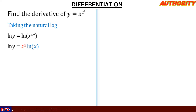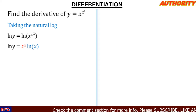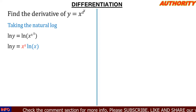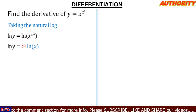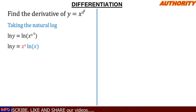Now, to find the derivative properly, we apply the product rule on the right hand side — we have x^x and ln(x) as two separate factors. The product rule says: find the derivative of x^x multiplied by ln(x), plus find the derivative of ln(x) multiplied by x^x.